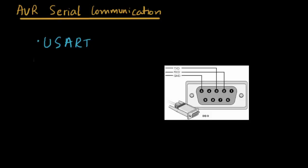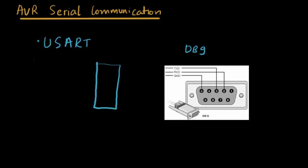You may have seen this type of connector on older computers — it's called the DB9 connector. To connect a microcontroller to this type of port you need a level converter, a level shifter, in between. That's called the MAX232, or a similar IC.